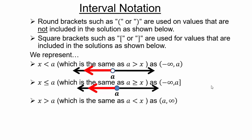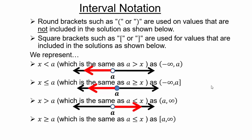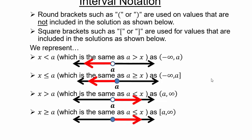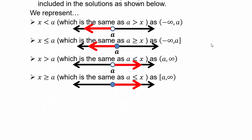For x greater than a: that would be left open parenthesis, a, comma, infinity, representing everything above a. For x greater than or equal to a: same picture, but a is included, so you use a square bracket — square bracket, a, comma, infinity. Infinity is used because you're going in the positive direction.